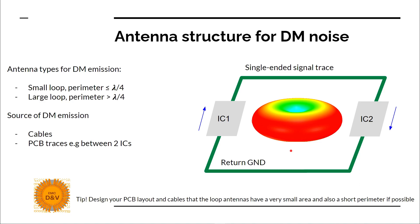In the vertical position there is no radiation. The radiation pattern changes when the loop perimeter increases beyond quarter wavelength. There are two parameters you should always keep in mind. First, area — you want the area of the loop to be as small as possible; this will decrease your emission for all frequencies for this type of antenna. And second, perimeter — the perimeter length equal to one wavelength determines the first resonance point of the loop antenna, and further resonances will be at integer multiples of this wavelength. The tip is: design your PCB layout and cables so that the loop antennas have a very small area and also a short perimeter if possible.